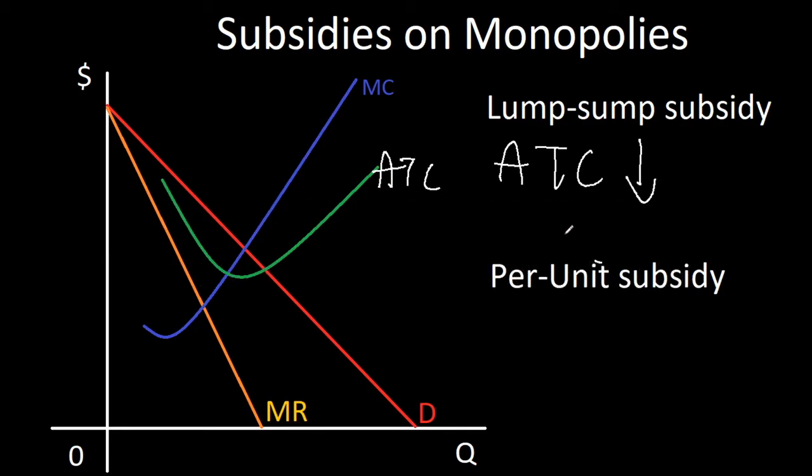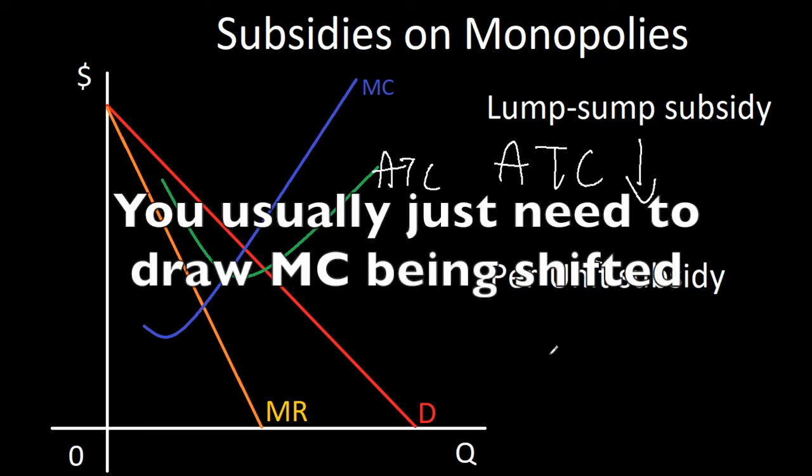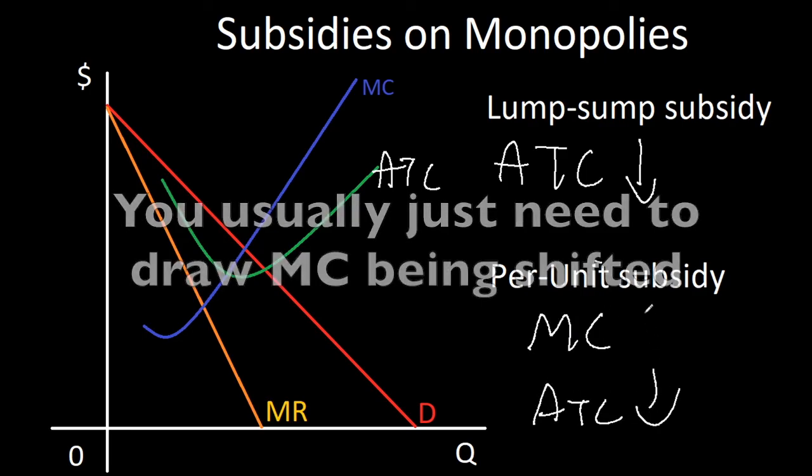Next we have a per unit subsidy, which subsidizes each and every additional unit. This means that average variable cost is decreased, shifting marginal cost downward, changing both MC and ATC to go downward.